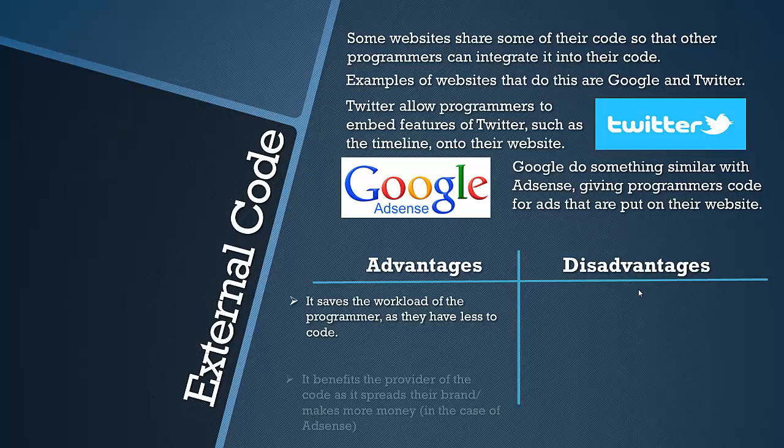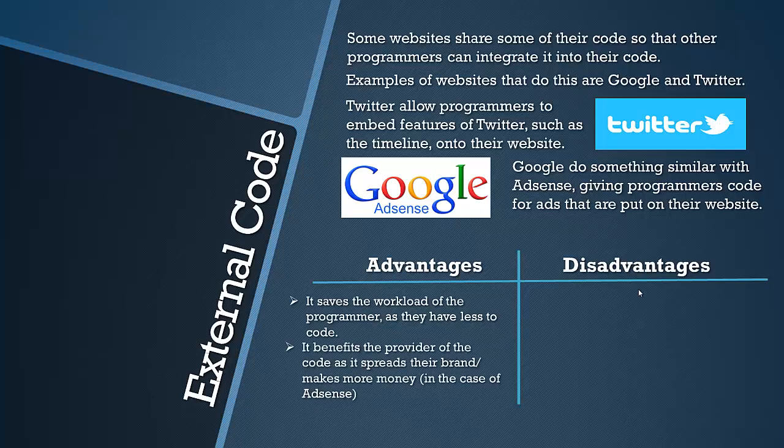It saves a lot of time and effort, but it also benefits the provider of the code. For example, it benefits Twitter because their logo and name will be on that section of the website, which spreads their brand and image. And in the case of AdSense, it makes Google more money because the more ads that have been embedded on websites, the more money Google will make.